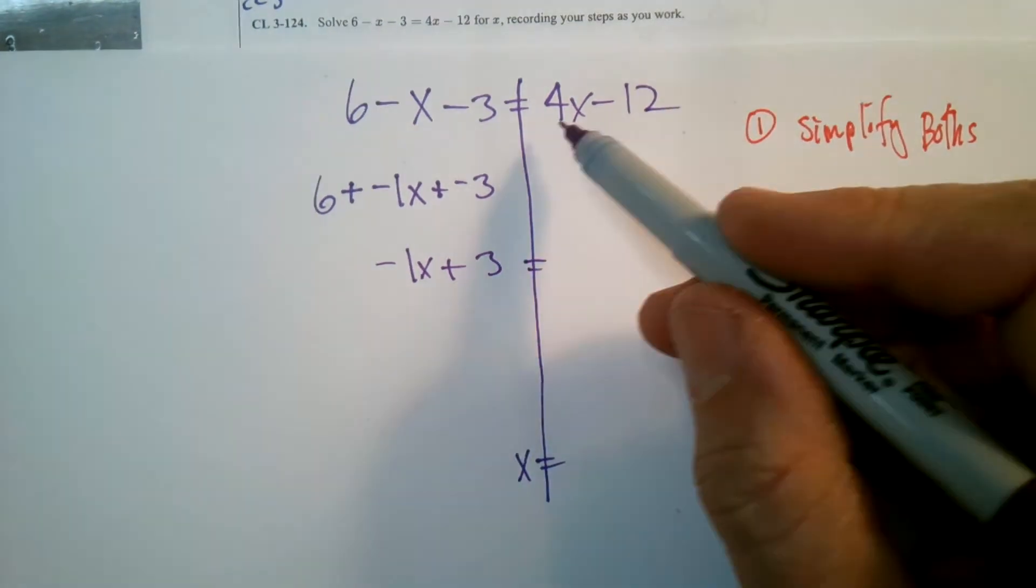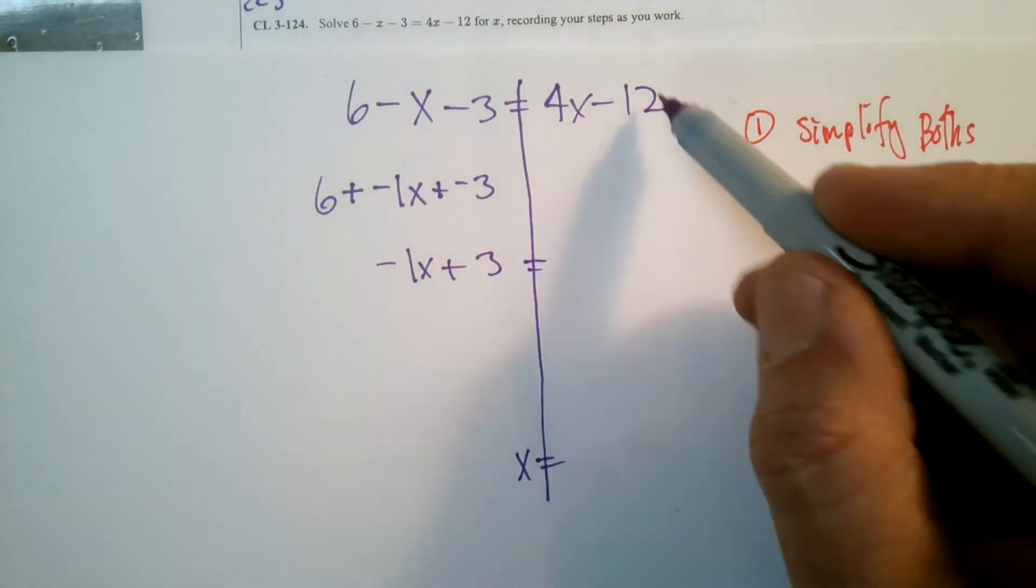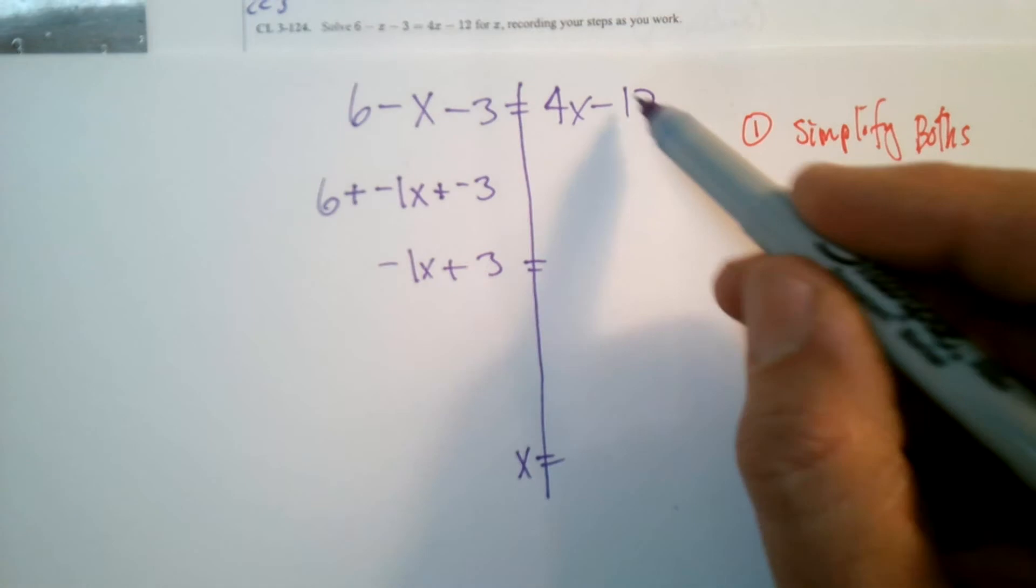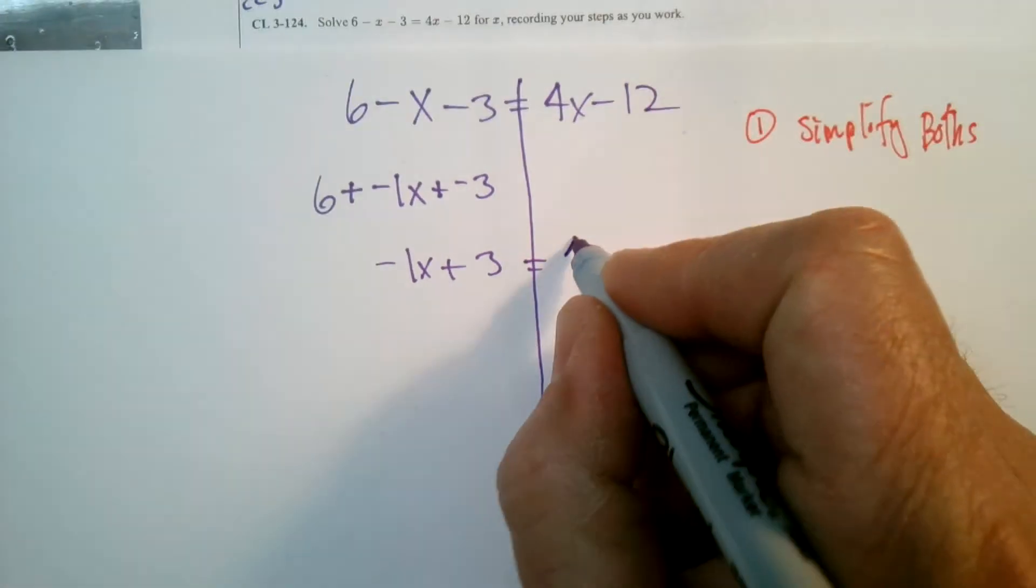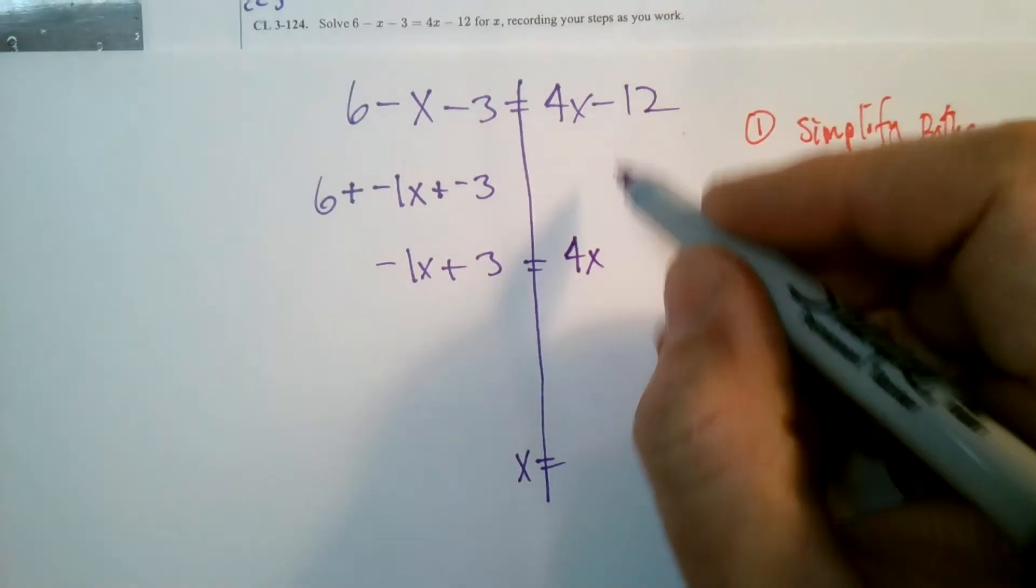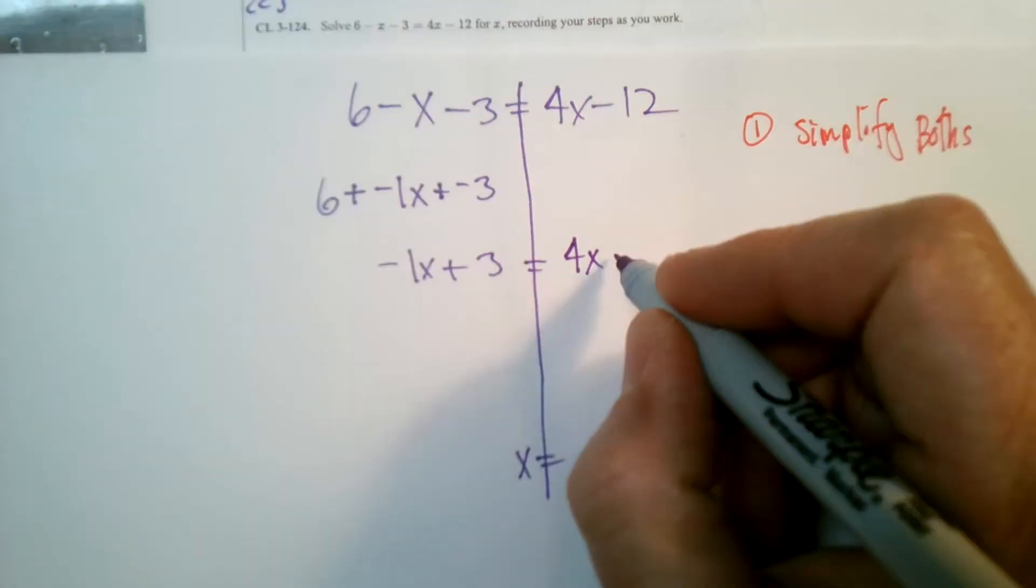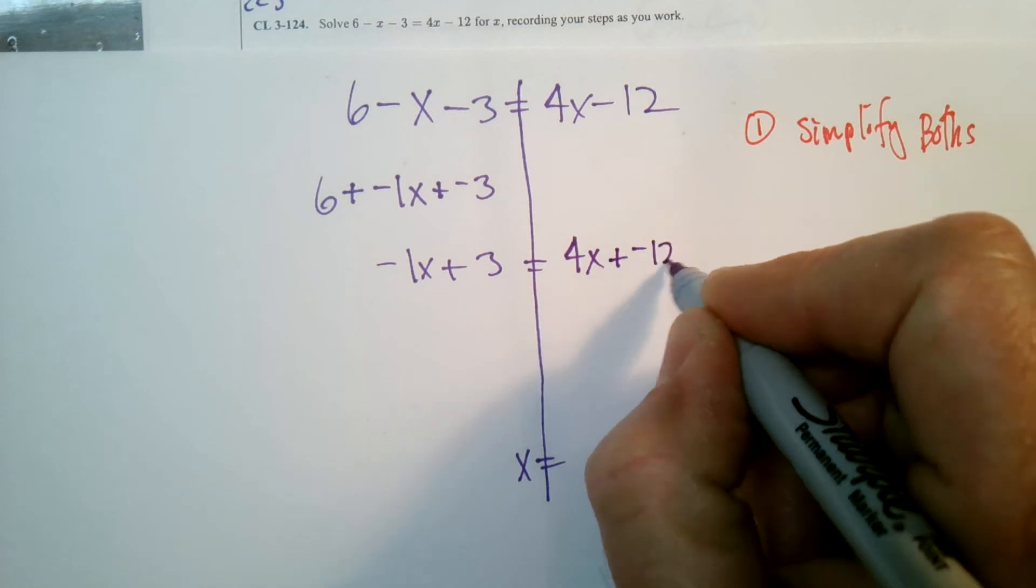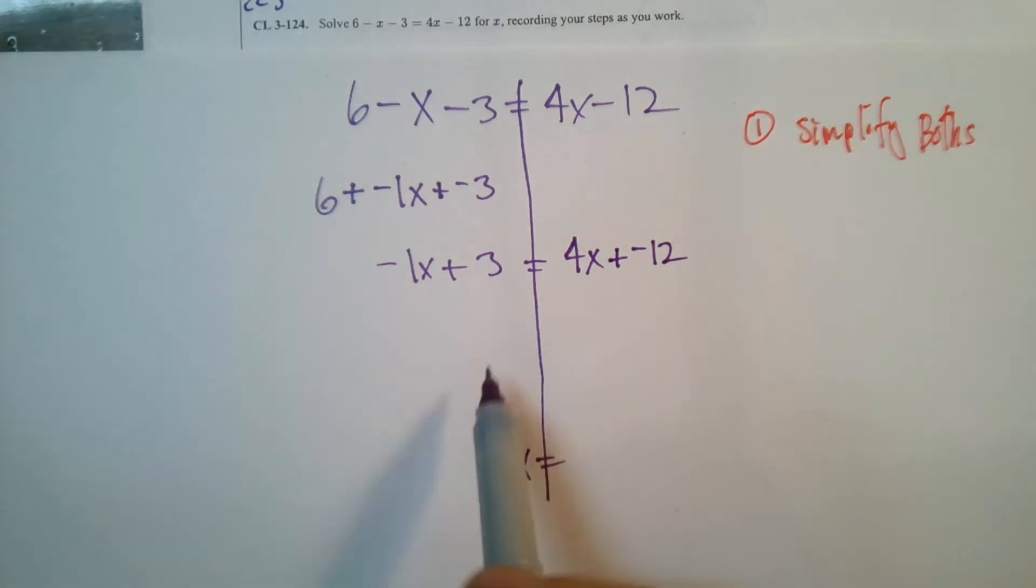A positive 3 equals, over here I don't have any combining of like terms to do. I have 4X minus 12. Those are not like terms, but I'm going to go ahead and just for the sake of keeping consistent, take that minus and write it as add the opposite, plus a negative. So now I have this expression: negative X plus 3 is equal to 4X plus negative 12.